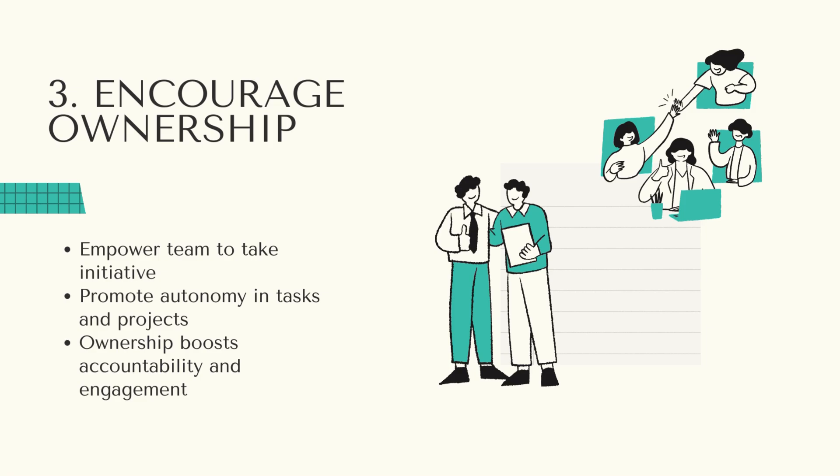Thirdly, encourage ownership. Empower your team by encouraging them to take ownership of their tasks and projects after clearly defining what success looks like for them. When individuals feel a sense of ownership, they are more likely to hold themselves accountable. Encourage initiative and autonomy, allowing team members to make decisions and learn from their experiences. This empowerment not only builds accountability but also enhances engagement and motivation. And don't be afraid for them to make mistakes, because this is how they will learn and grow as individuals.